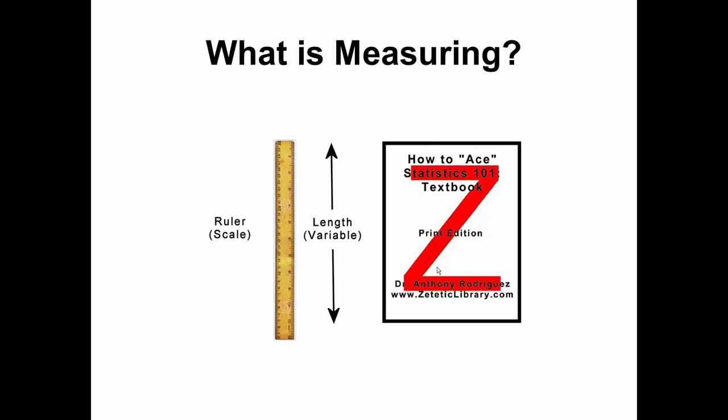Measuring are ways of assigning values to variables based on scale. For example, one may measure the length of a book — that is, a variable — using a ruler, that is, a scale.